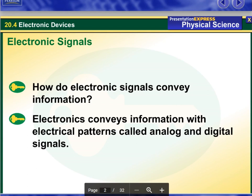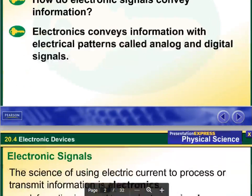Then we have electronic signals. How do electronic signals convey information? Electronics conveys information with electrical patterns called analog and digital signals.